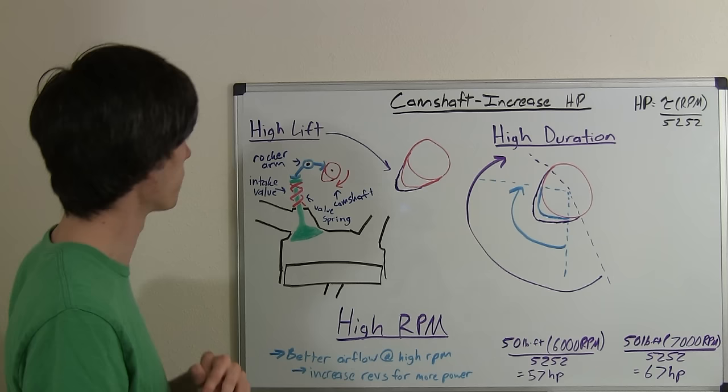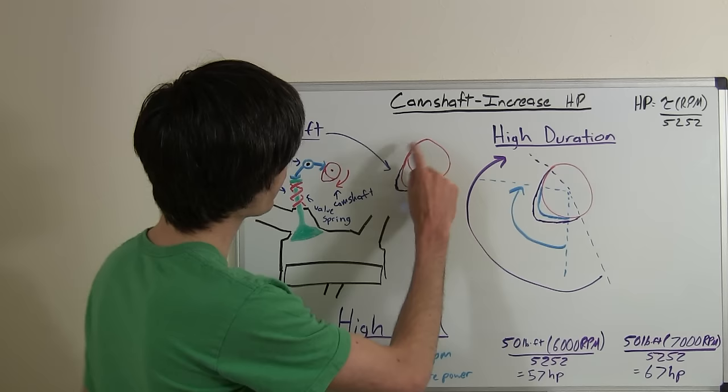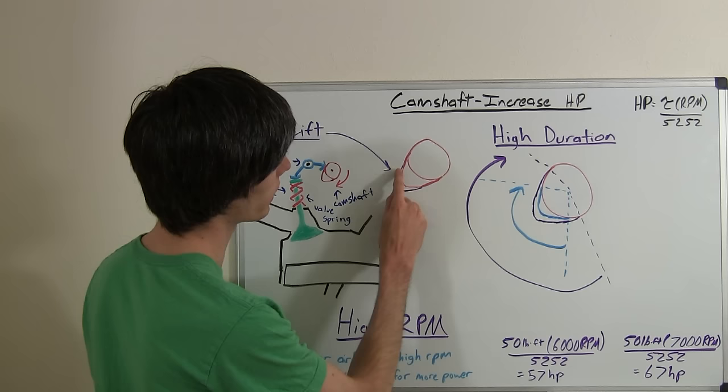One thing that you can do in order to push that valve down further and allow more air to flow in is have a higher lift. So if we had our camshaft here, everything that you see in pink, and then we swapped it out with one that had a cam lobe like this,